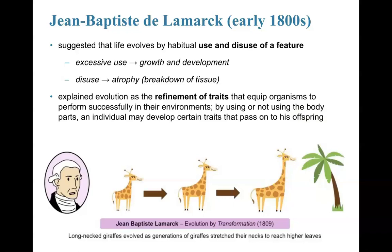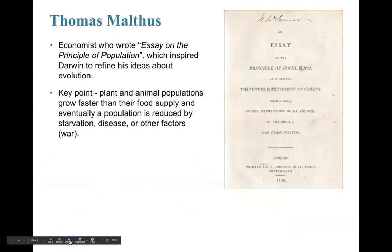Lamarck was on to something, but this is incorrect — this is not how organisms work in real life. If I consistently work out and gain high muscle mass, that doesn't mean my offspring will automatically have lots of muscle mass. So Jean-Baptiste's theory was going in the right direction but wasn't exactly hitting the mark.